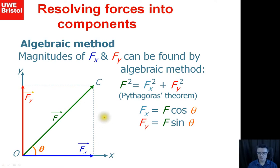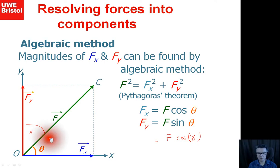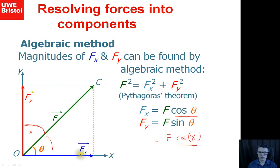I prefer to work with cosine throughout, which becomes clearer when working on frameworks. An alternative approach is to find the complementary angle gamma and use F cos γ for the y-component — with cosine, you always swing through the angle. Sometimes it's easier to use sine, but sometimes it's easier to find that other angle and use cosine instead.